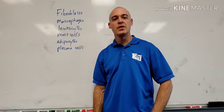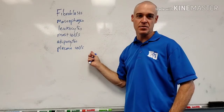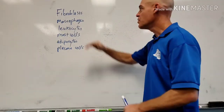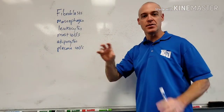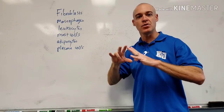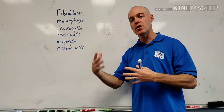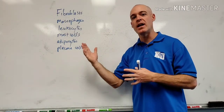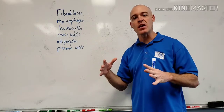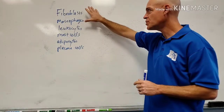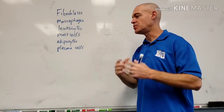Hey everyone, today we're going to cover the six cells found in connective tissue. These are the six right here that are typically found in specifically a type of connective tissue called fibrous connective tissue. We have talked about tissues in another video, so you might want to watch that if you want to learn more about the different types of tissues and classifications. But this is going to fall under what we classify as fibrous connective tissue.